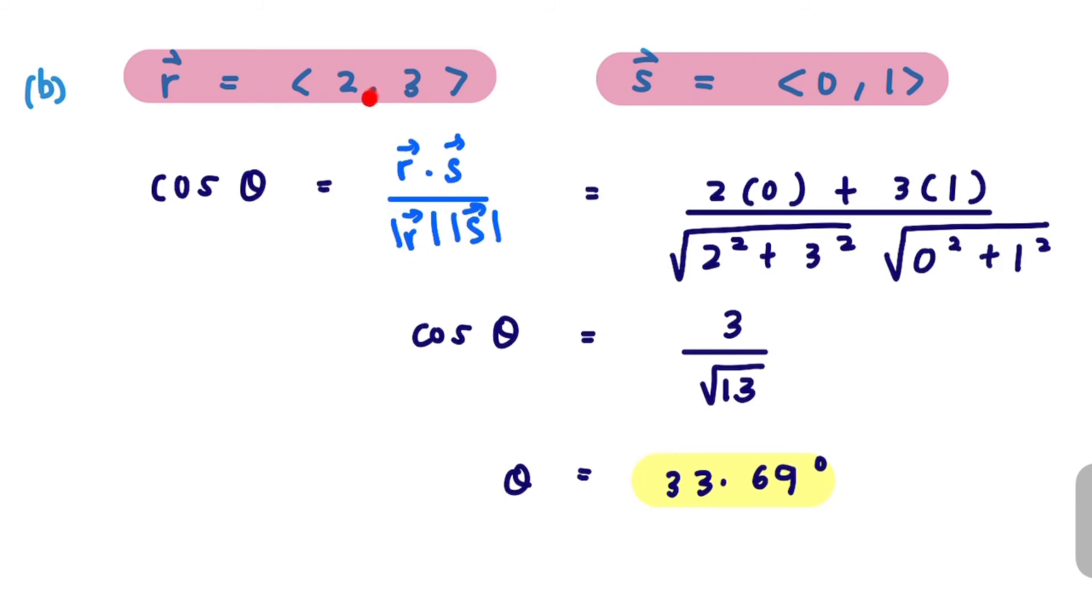So let's find r dot s, this is just 2 times 0 plus 3 times 1, over magnitude r is just square root of 2 squared plus 3 squared and then multiply with magnitude s which is just square root of 0 squared plus 1 squared.